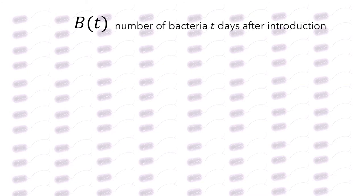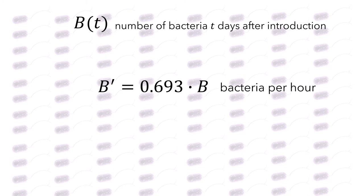Suppose you start off with a single bacteria, and then it reproduces, and each of these reproduce, and each of those reproduce, again and again. In this scenario, the number of bacteria grows more rapidly when there are more bacteria present. If b is the number of bacteria t days after they are introduced into an environment, then the differential equation b prime equals 0.693 times b models their growth, where this is measured in bacteria per hour. In particular, it shows us that when the number of bacteria is large, the rate of population growth is also large.